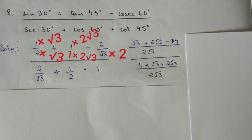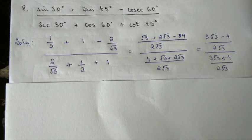For the denominator: root 3 plus 2 root 3 gives 3 root 3, plus 4. This gives us 3 root 3 minus 4 by 2 root 3, and 3 root 3 plus 4 by 2 root 3.